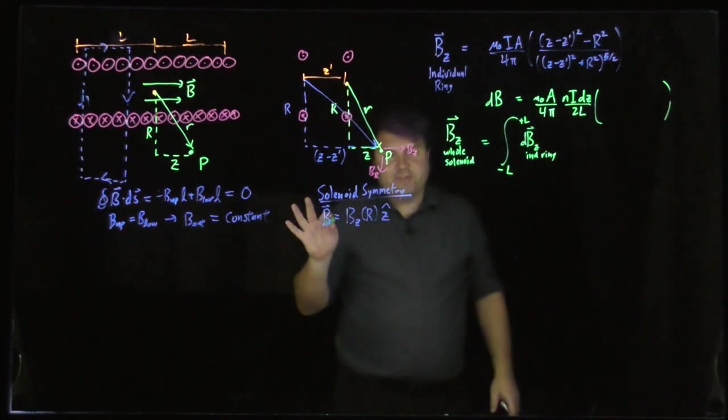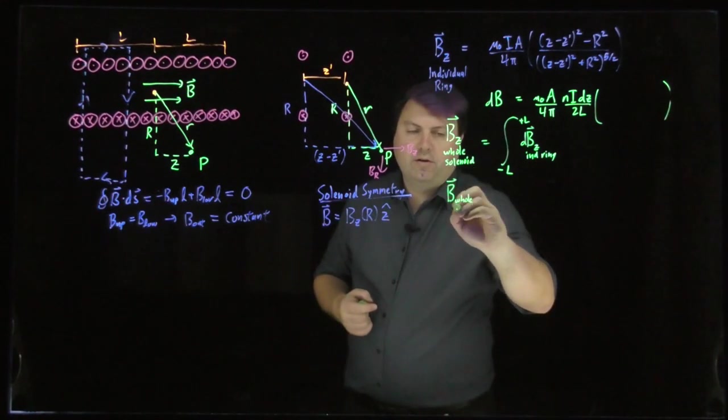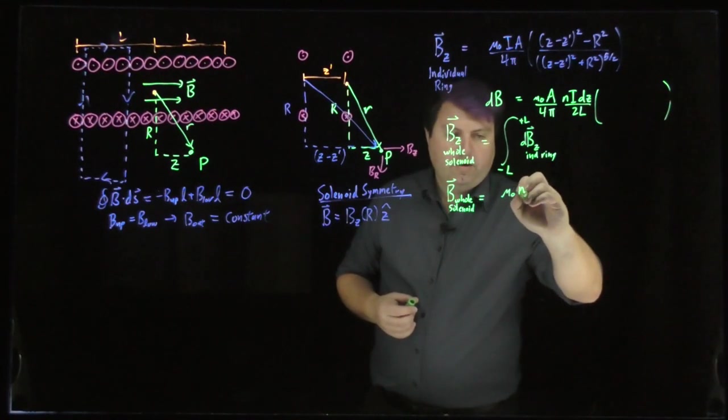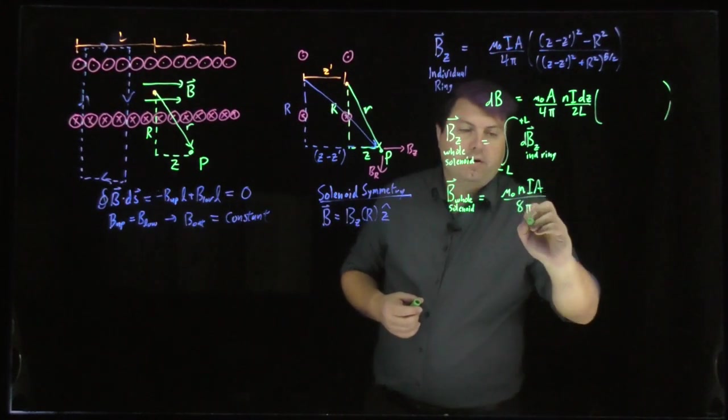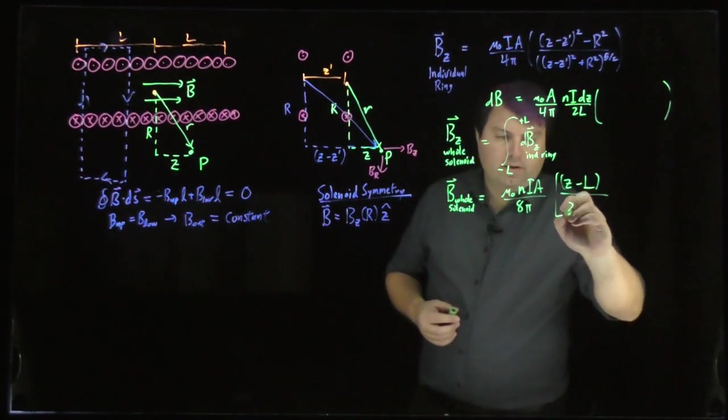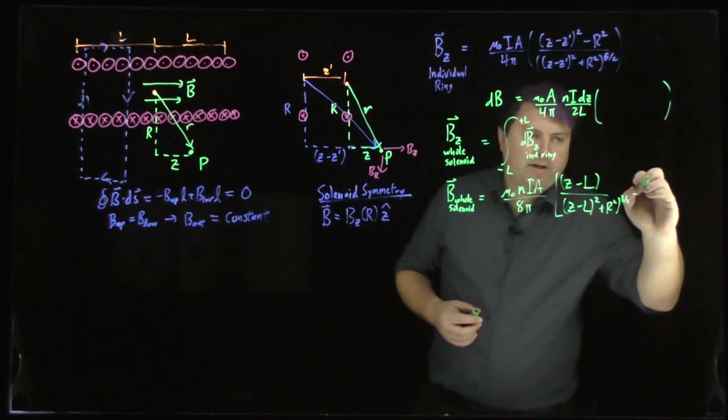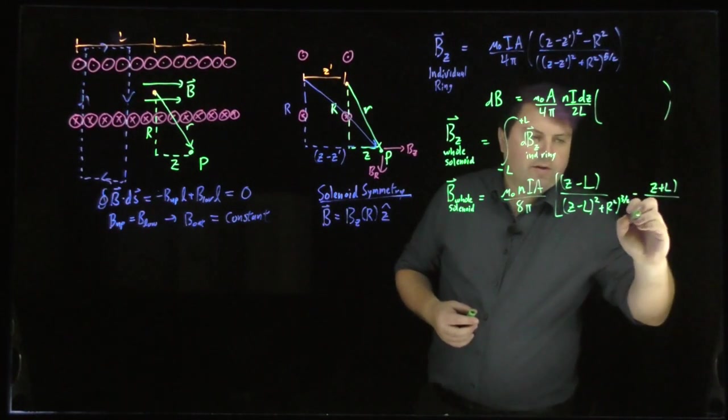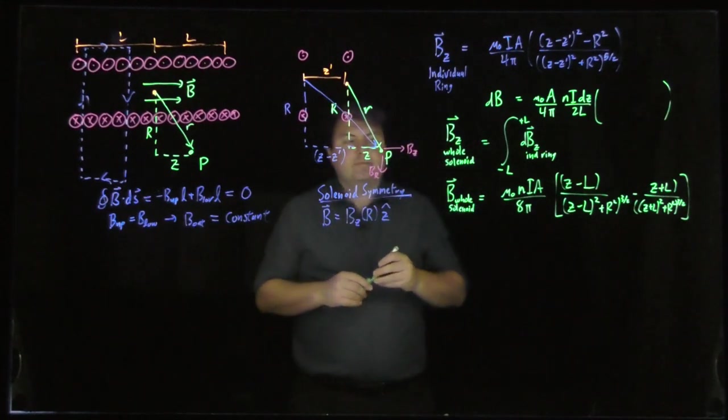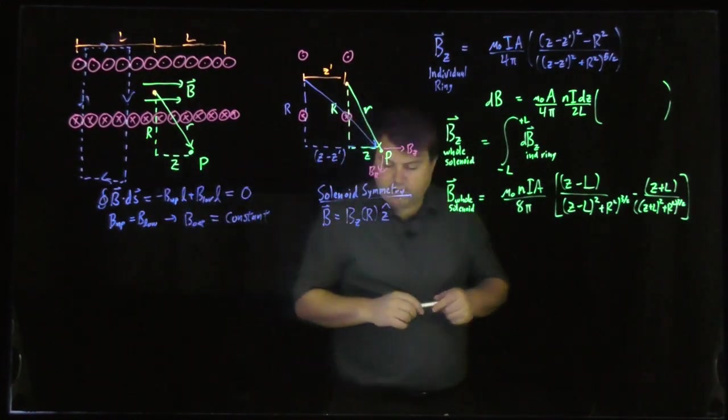So this is so far beyond what we want to do in this class, but I feel that I owe you an answer, so I'm kind of taking us through a couple of individual steps. So the BZ of our whole solenoid is then equal to mu naught N IA over 8 pi. And then we have Z minus L over Z minus L squared plus R squared to the 3 halves minus Z plus L over Z plus L quantity squared plus R squared to the 3 halves. So all of this is good. So then we're saying, if we have this point here, then everything is good. Now,